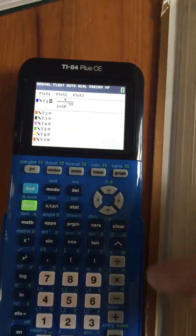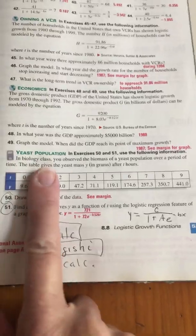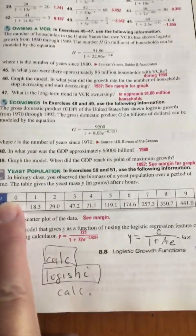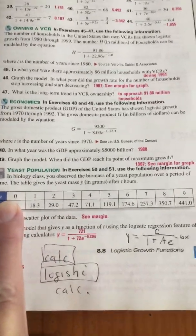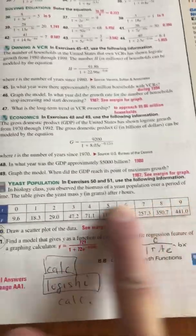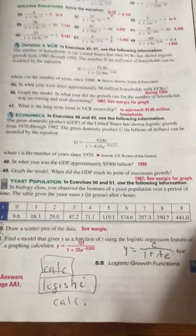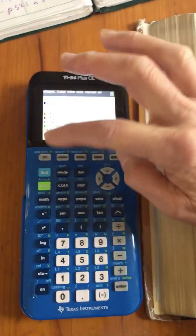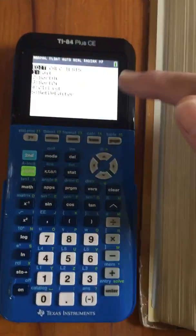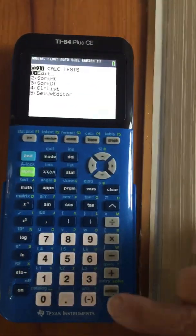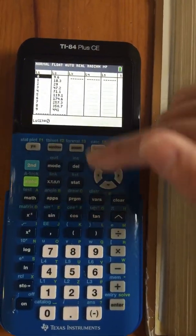So now I'm going to go back to y equals. I'm going to clear out what's in here. Now we're going to do a logistic regression. I'm going to put in this data about yeast, and then we're going to get the formula that goes with it. So I quit out of this. Second mode is quit. I go to stat. I want to put in data. I say enter, and I've already put it in.